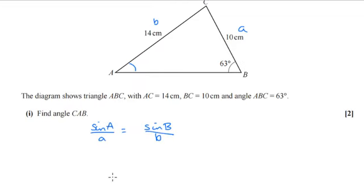So if we substitute our information in now, a is the angle that we're looking for, so I'll just leave that as a. Side a is 10. Sine b is sine of 63, and little b is 14.